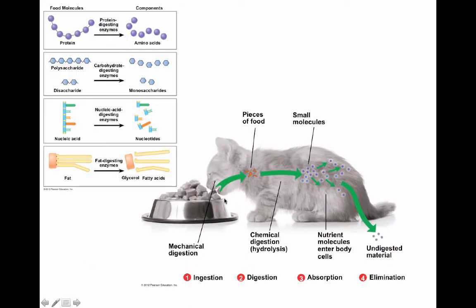Digestion happens in four main steps. The first is ingestion — taking food into the body. Then comes the process of digestion itself, which happens in two ways: mechanically, through some sort of grinding of the food in the mouth or in the gizzard of many organisms.